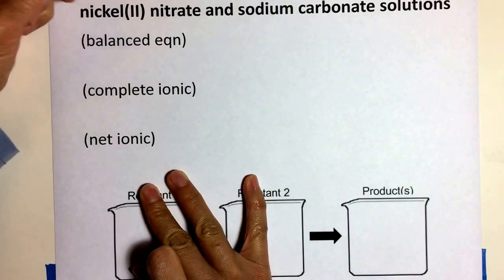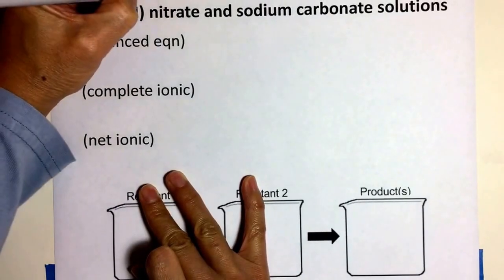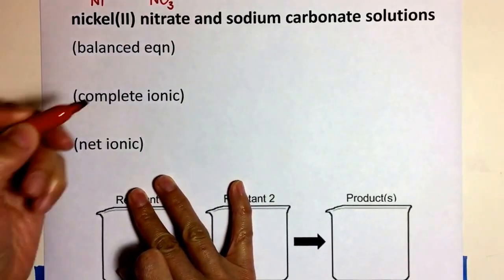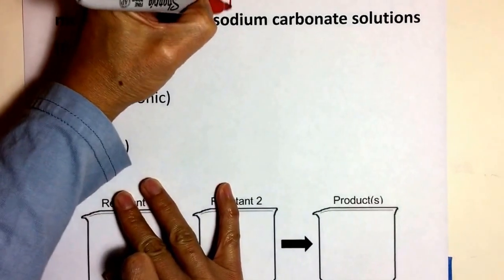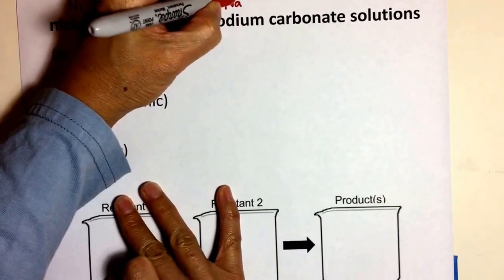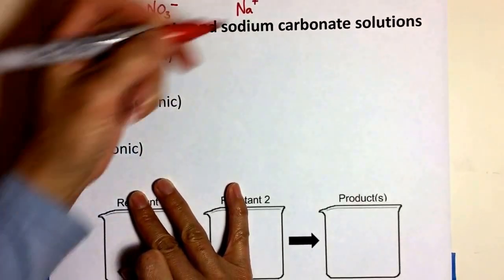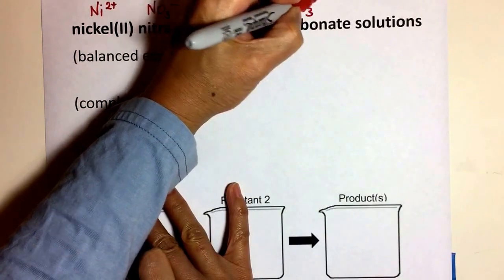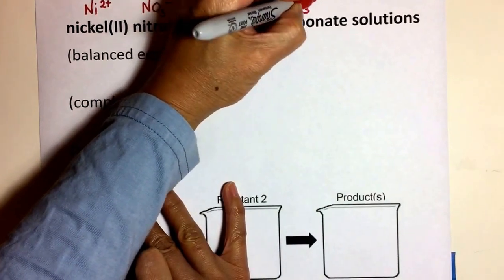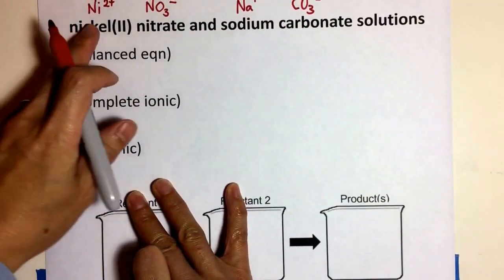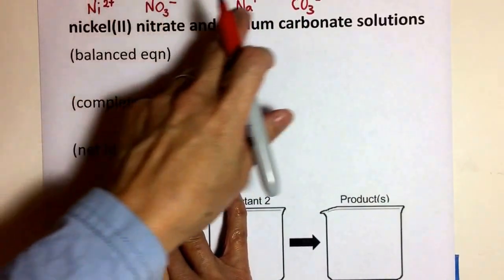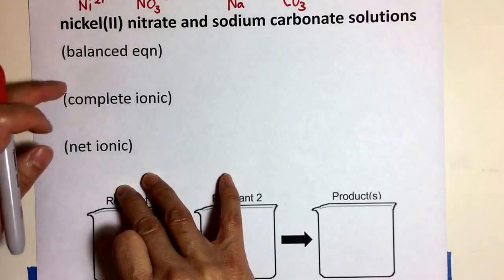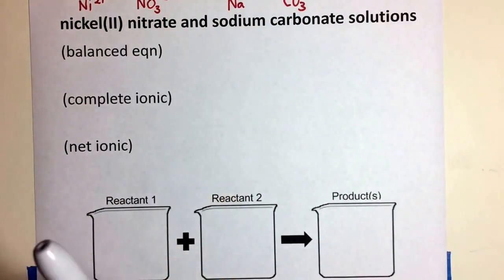So this is nickel two plus, this is nitrate, this is sodium ion, and then carbonate ion. I haven't balanced or neutralized these compounds yet and formed those compounds. I will do that when we get to the balanced equation.